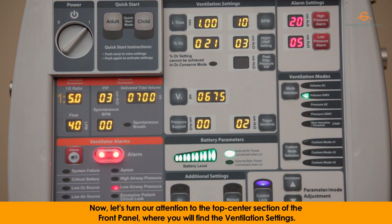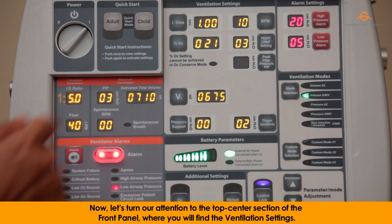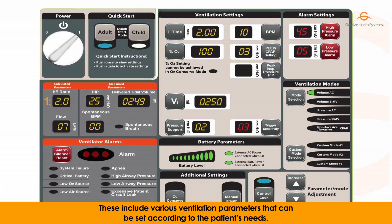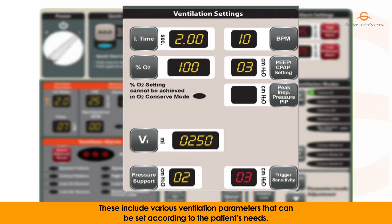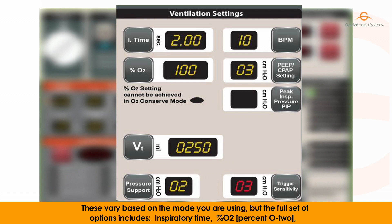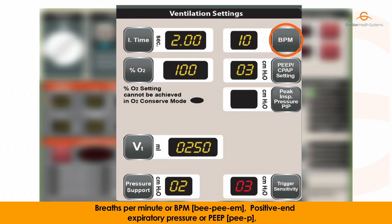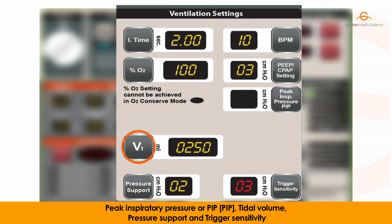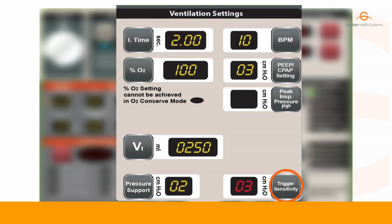Now let's turn our attention to the top center section of the front panel, where you will find the ventilation settings. These include various ventilation parameters that can be set according to the patient's needs. These vary based on the mode you are using, but the full set of options includes inspiratory time, percent O2, breaths per minute (BPM), positive end expiratory pressure (PEEP), peak inspiratory pressure (PIP), tidal volume, pressure support, and trigger sensitivity.